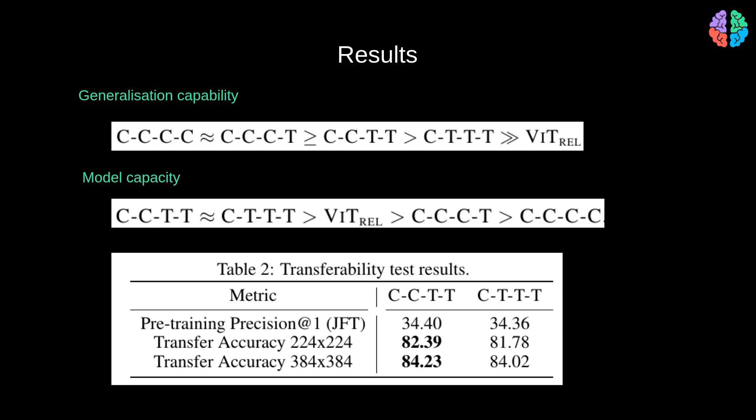The last thing they study is the transfer learning capability of the network. For this, they train a network on JFT dataset and transfer to the ImageNet 1K dataset. Clearly, the model with two conv and two transformer blocks is a winner here. So they have chosen this setup as a standard building block for the CoAtNet architecture.